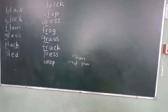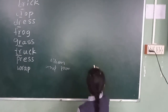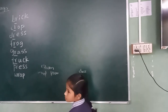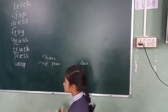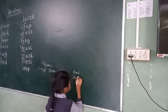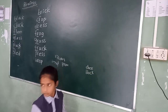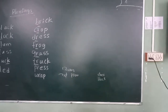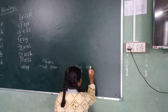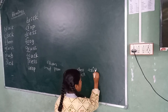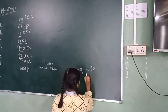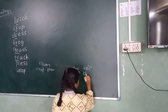Umaima, come fast. Dress. Very good. Next word is block. Block. Very good. Go. Next. Mughira, come fast. Write. Trip. Trip. Blog.